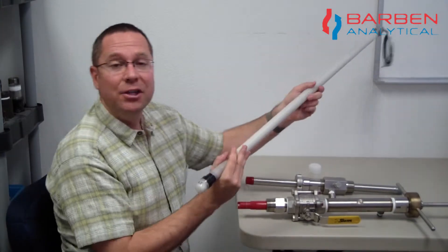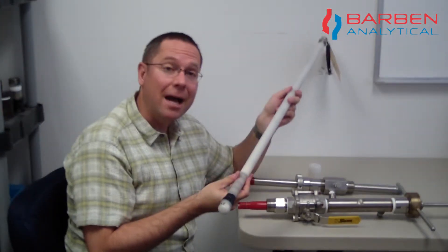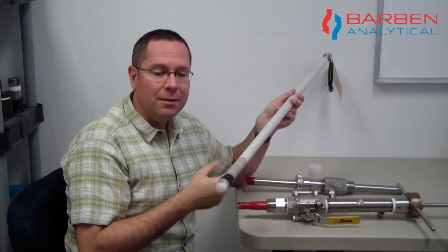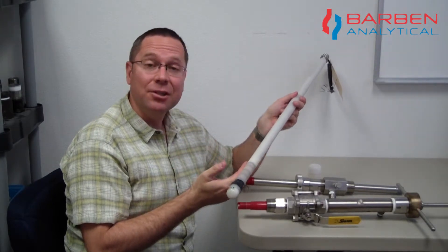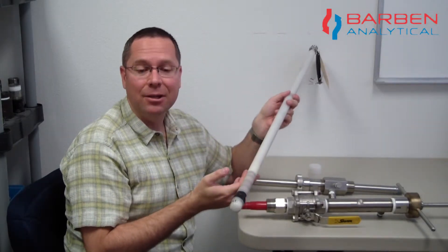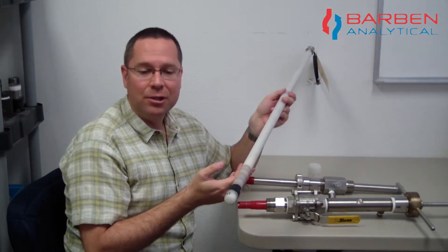Today we're going to take a look at a very special version of one of our hot tap sensors. This is our 567 all plastic hot tap retractable sensor.